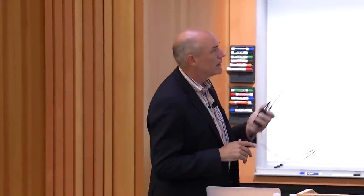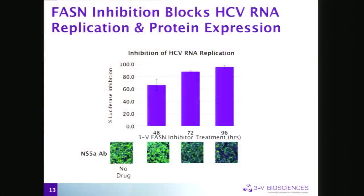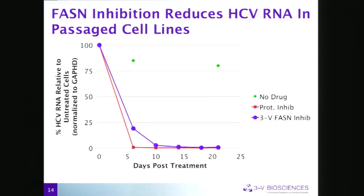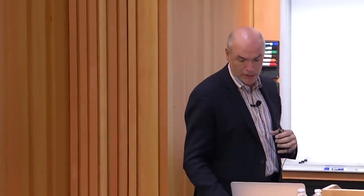Working with the replicons, the key question is whether we're just messing up translation and luciferase expression. We get about 95% plus inhibition of luciferase by 96 hours after drug treatment. NS5A staining shows the protein actually starts to go away. Looking at HCV RNA load in replicants over time, we're able to clear it out. Telaprevir, a hep C protease inhibitor, clears HCV RNA in six days. Our TVB2640 inhibitor takes about ten days but similarly clears the HCV RNA — inhibiting protein expression and clearing RNA from the cell line.